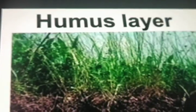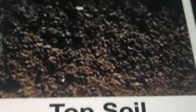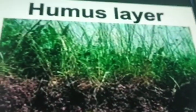Soil is the loose material formed on the surface of the earth. It is a mixture of minerals and broken rocks, living organisms, and decayed organic matter. The top layer of the soil is rich in humus. The dead and decaying organic matter is called humus. Humus is dark, soft, and rich in nutrients.